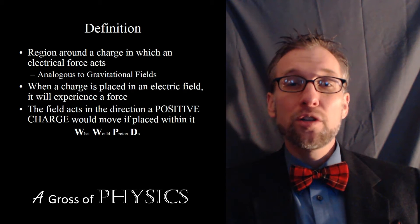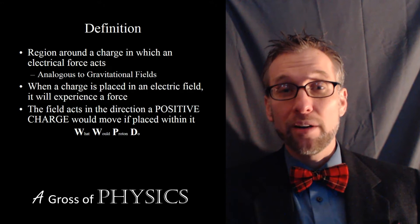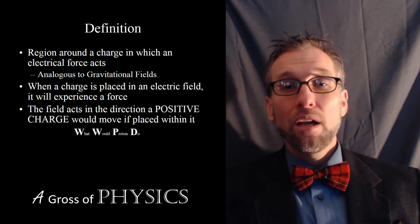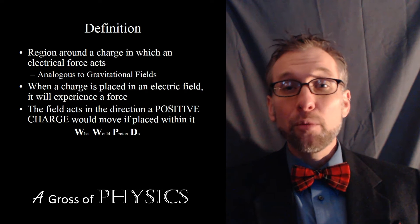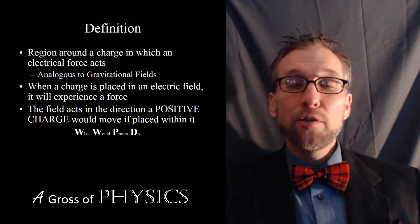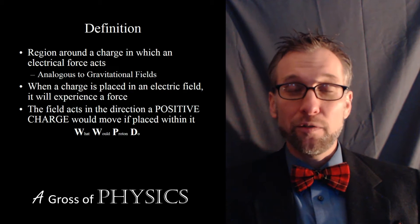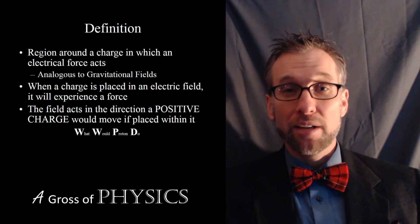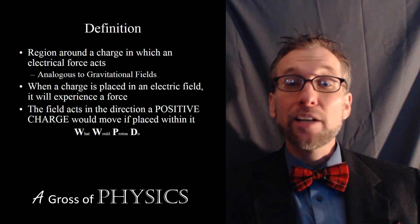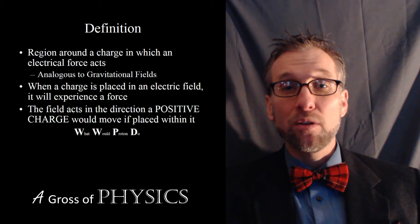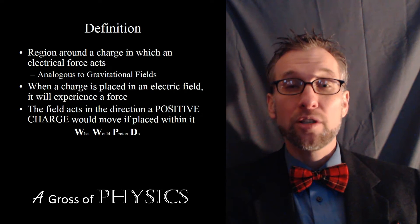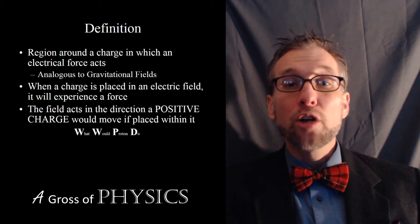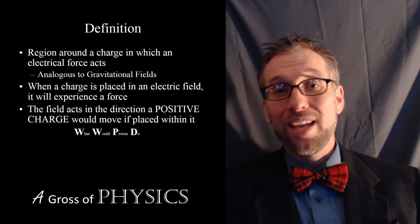So if we have a charged sphere, such as a Van de Graaff generator, and it's charged with a certain amount of excess charges, around that Van de Graaff generator sphere there will be an electric field. The biggest difference between an electric field and a gravitational field is that the gravitational field is affected by the mass of the objects. In an electric field, it's a consistent value independent of the charge itself — the electric field is based on the charged object, not the charges within the field.